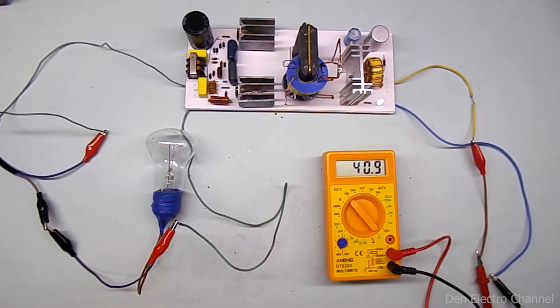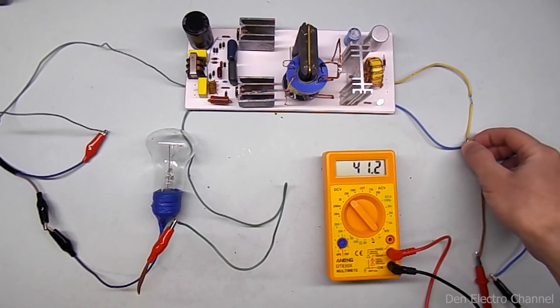True, it is unstable and jumps all the time. But if you take one of the secondary winding terminals with your hand, the voltage will show adequately.